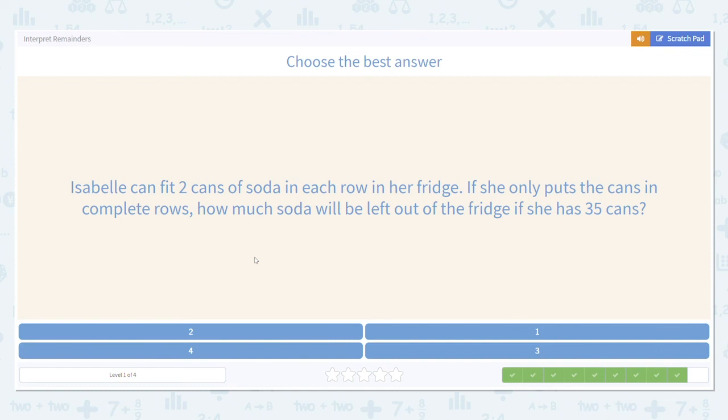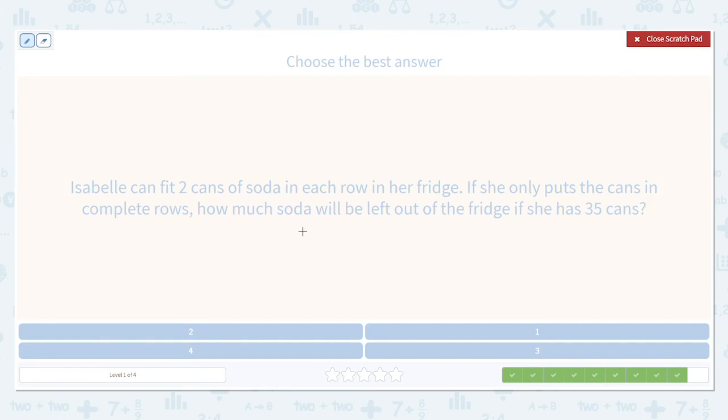Isabel can fit two cans of soda in each row in her fridge. If she only puts the cans in complete rows, how much soda will be left out of the fridge if she has 35 cans? Once more, we're looking for what's left over so we divide.